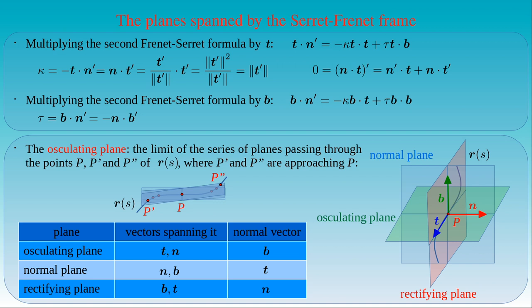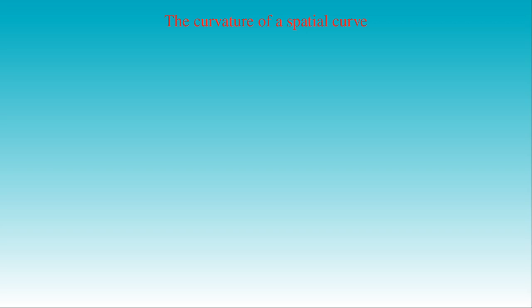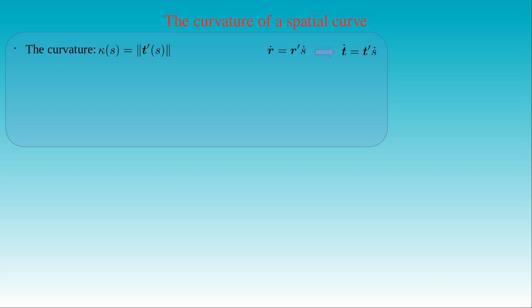Let us start with the geometric interpretation of the function kappa as the curvature of a spatial curve at a given point. We define kappa as the length of the derivative of the tangent T with respect to the arc length. Using curves parametrized with arc length, and the chain rule result that r-dot equals r-prime times s-dot, we apply the same rule to the derivative of the tangent T: T-dot equals T-prime times s-dot. Then we can express the length of T-prime as the ratio of the length of T-dot to s-dot, supposing that the arc length s is a monotonically increasing function of the curve parameter t.